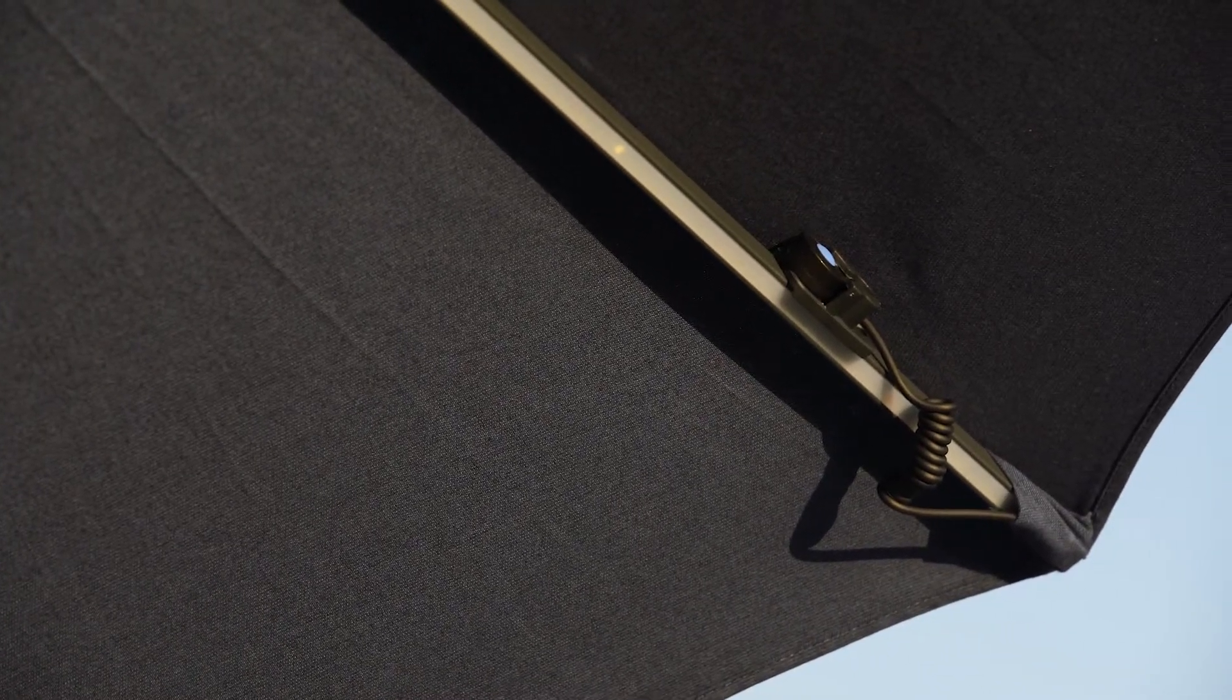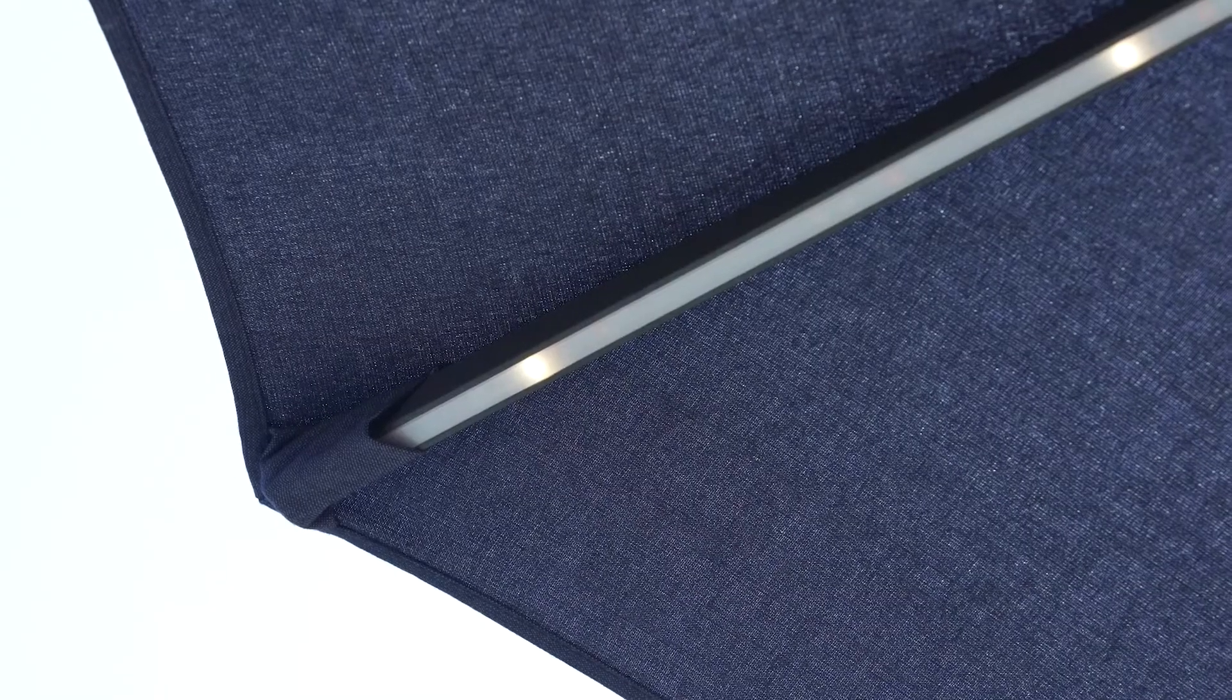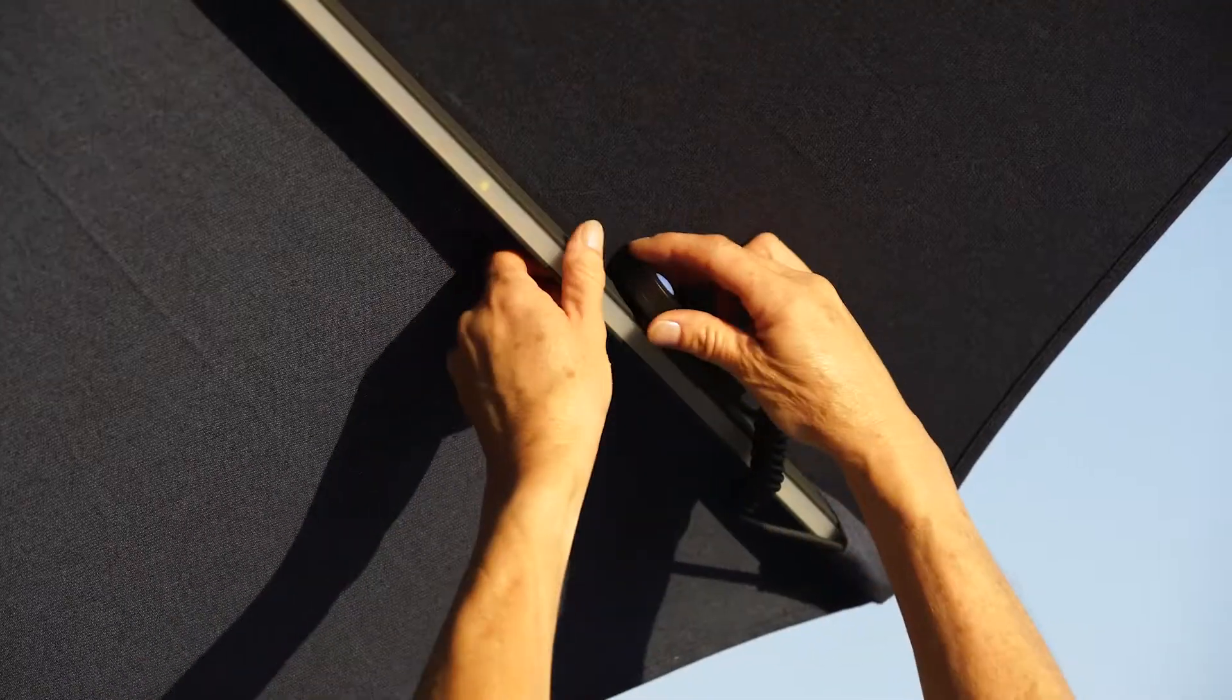To use the LED lights, locate the switch which is on the side of the LED rib end. Press the button on the switch to turn the lights on and off. The switch can be released from the holder to hang for easy accessibility.